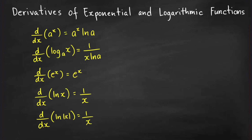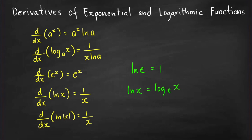Knowing those two formulas makes it easy to recall the derivatives of e to the x, ln x, and ln of the absolute value of x. Since ln e equals one, when a equals e the derivative of e to the x is just e to the x. Similarly, ln x is log base e of x, so its derivative is 1 over x times ln e, which simplifies to 1 over x. This formula also holds when x is replaced by the absolute value of x, which you'll typically learn after studying the chain rule.